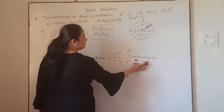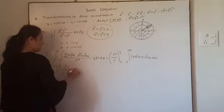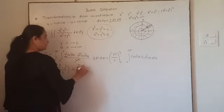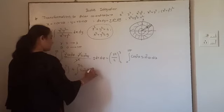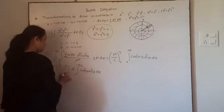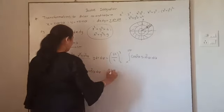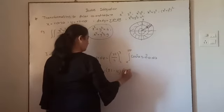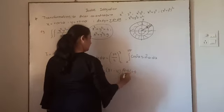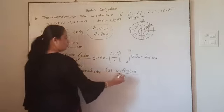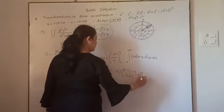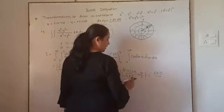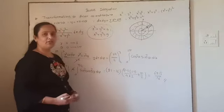Since sin²θ cos²θ is an even function, we can use the symmetry result: instead of integrating from 0 to 2π, we write 4 times the integral from 0 to π/2. Applying the reduction formula: 3⁴ = 81, 2⁴ = 16. Using the reduction formula for sin²θ cos²θ with exponents both 2, we get (2−1)·(2−1)/(2+2) · π/2 = 1/4 · π/2. The final answer is 65π/16.